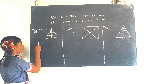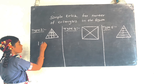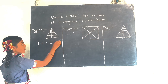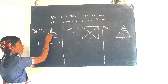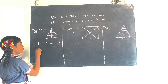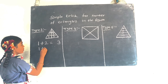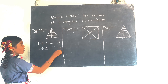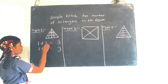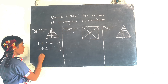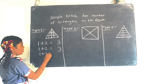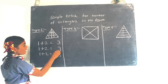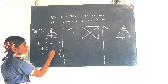In each section, 1 plus 2 is equal to 3. Counting three sections: 1 plus 2 equals 3, again 1 plus 2 equals 3, and 1 plus 2 equals 3. Now add these together.